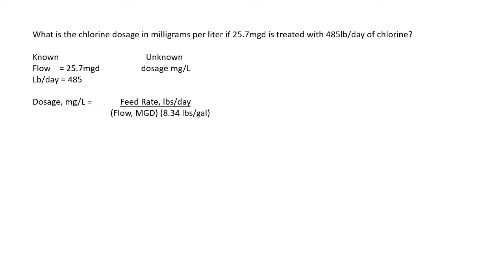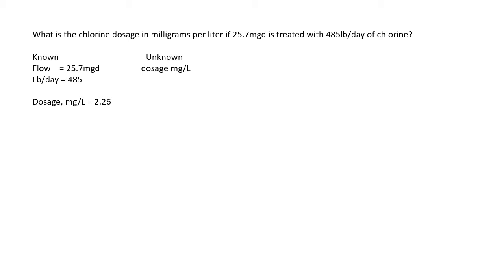The unknown is dosage, so dosage in milligrams per liter is equal to the feed rate pounds per day, divided by flow MGD times 8.34 pounds per gallon. Plugging in the values: 485 pounds per day divided by 25.7 MGD times 8.34 pounds per gallon. Solving the multiplication on the bottom first gives 214.338. Then 485 divided by 214.338 equals 2.26 milligrams per liter.